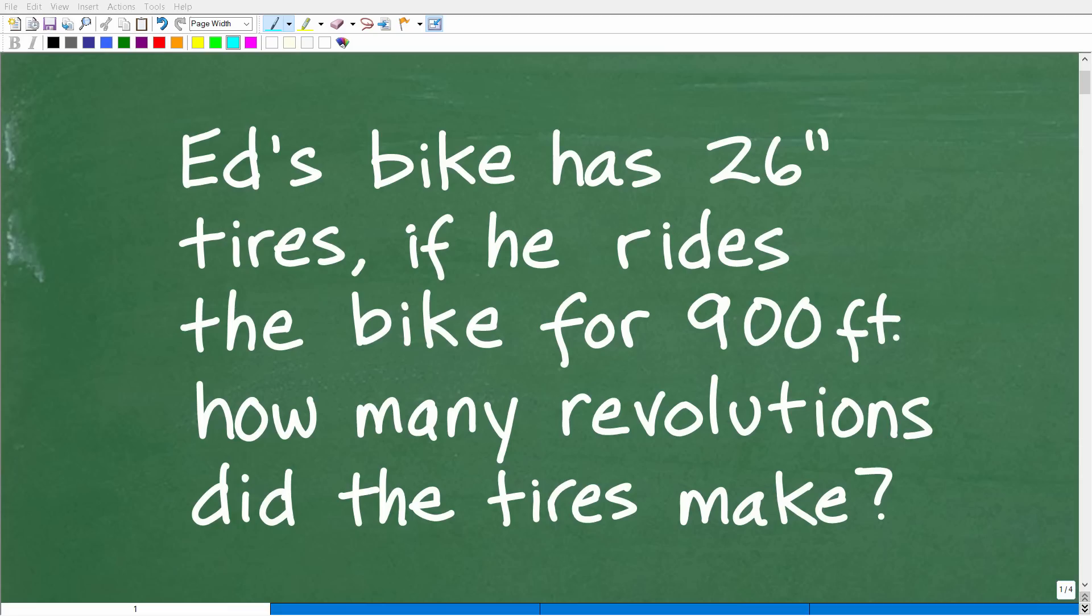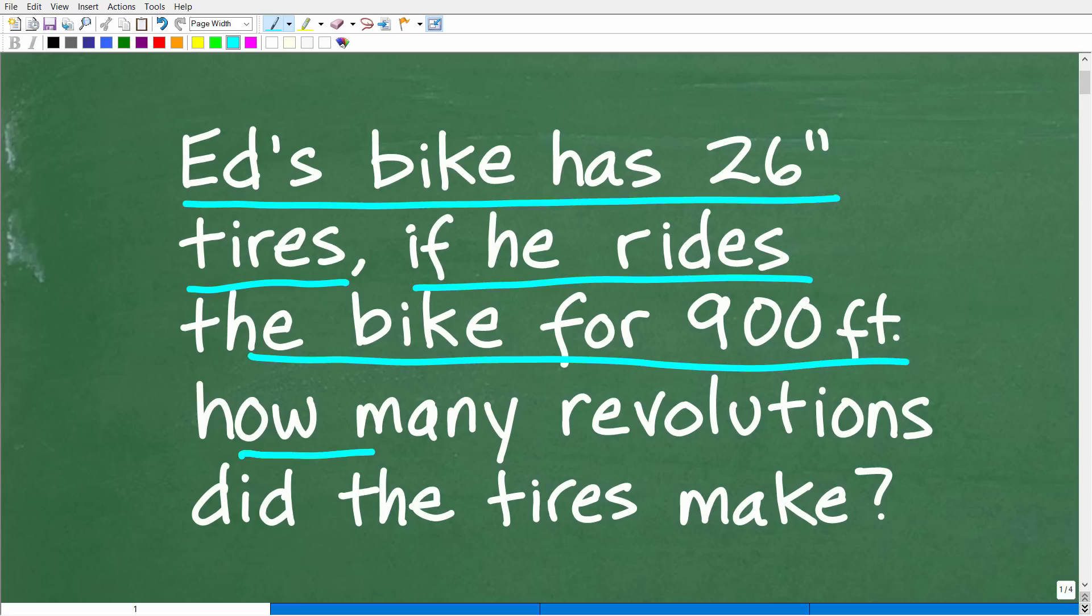Okay, so get ready to use your math knowledge and skills to solve this interesting math word problem. Matter of fact, let me go ahead and read the problem. It is the following: Ed's bike has 26-inch tires. If he rides the bike for 900 feet, how many revolutions did the tires make?